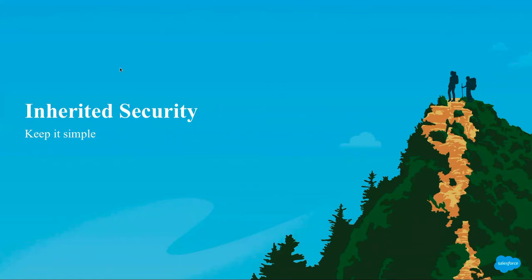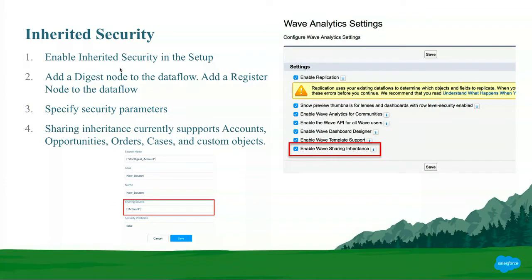First, we're going to talk about inherited security in Einstein Analytics. Inherited security is a simple thing that you enable in the setup menu in Salesforce. When you define a new data flow and pull a new object in, you specify an object that needs to be the source of the security for that data set. So if you're pulling in the account object from Salesforce, you would say that the sharing source would be account. This replicates all of your Salesforce security in Einstein Analytics, and users will see exactly what data they should see. The issue is that you can only pull 2,000 rows when using this type of security technique. If there are more than 2,000 rows returned by any query, it's going to error out and the user won't have access to any data.